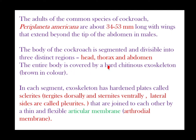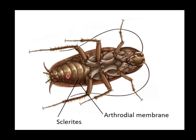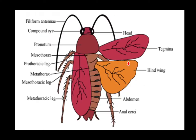The entire body is covered by a hard chitinous exoskeleton that is brown in color. We can see the head, filiform antenna, compound eyes, pronotum, and wings — that is tegmina or forewings, and hind wings. The thorax is divisible into prothorax, mesothorax, and metathorax.